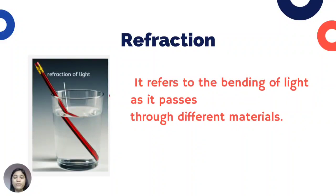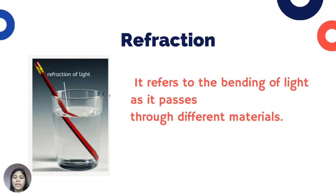Refraction refers to the bending of light as it passes through different materials. For example, a pencil in a glass of water appears bent because of the different materials that interact with the light. The part of the pencil deep in water interacts with the water. Light moves faster in air than in water — when light travels from air to water, its speed decreases. A medium is optically dense if it slows down the speed of light. This is why the pencil looks bent.